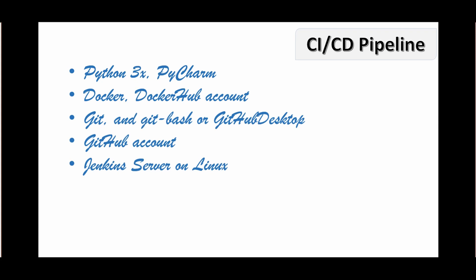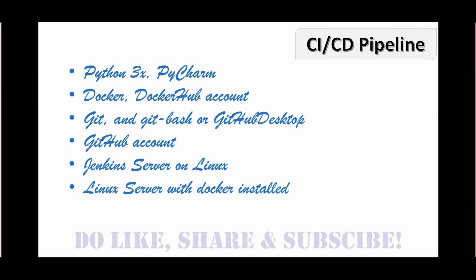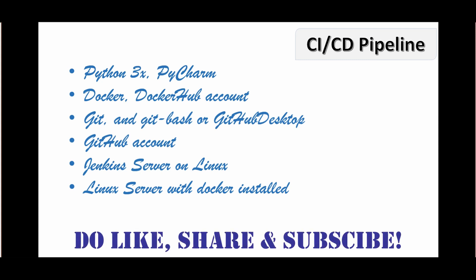Next we need a Jenkins server running on a Linux machine — in my case it's running in VirtualBox on my Windows machine, configured as a bridged network so the IP is accessible from the Windows host. We also need a Linux server with Docker installed, which serves as my production server where I deploy and run the Docker image. CI/CD is really about stitching together the whole solution with different software and services.